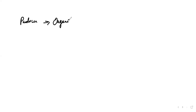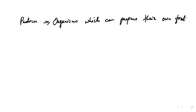Producer means the organisms which can prepare their own food. The same photosynthesis definition is applicable to producers. The examples we can consider are plants as well as BGA — blue-green algae.